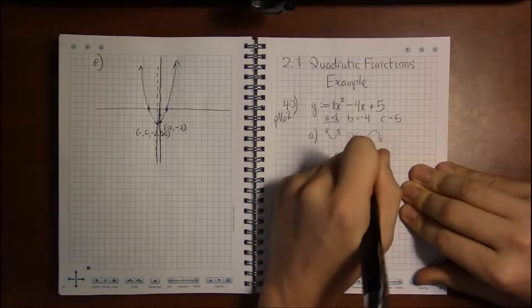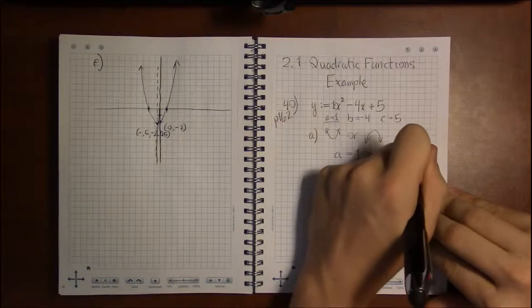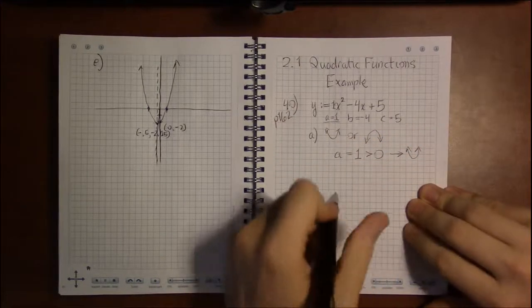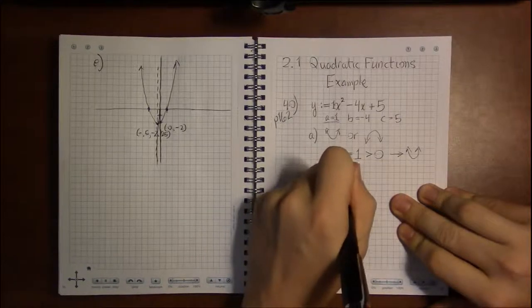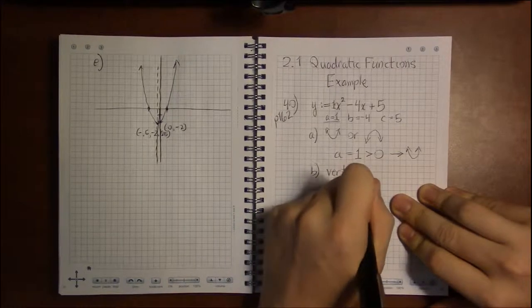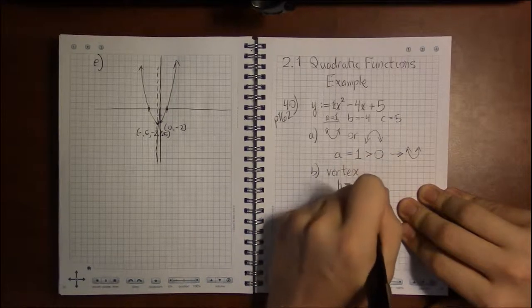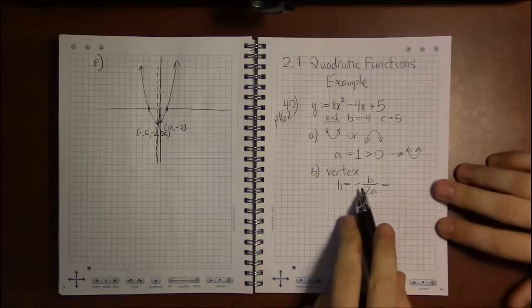Since a is 1, it's positive or greater than 0, which means this graph opens up. Part B asks for the vertex, so we're going to need the formula that h, the x-coordinate of the vertex, is minus b over 2a.